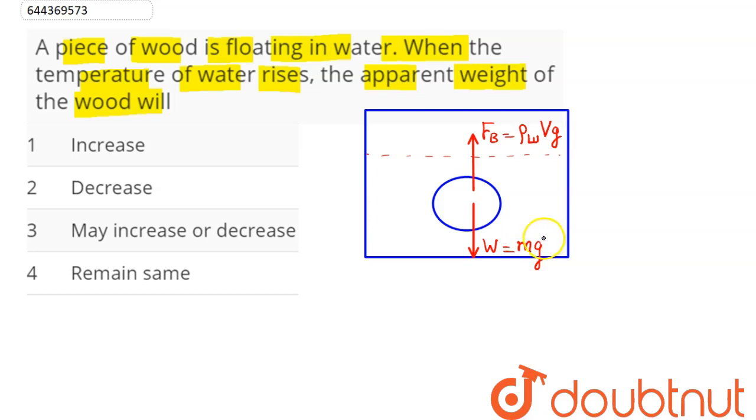We can see here apparent weight is given by true weight, that is mg, minus buoyancy force. So this comes as mg minus density of water into V into g.